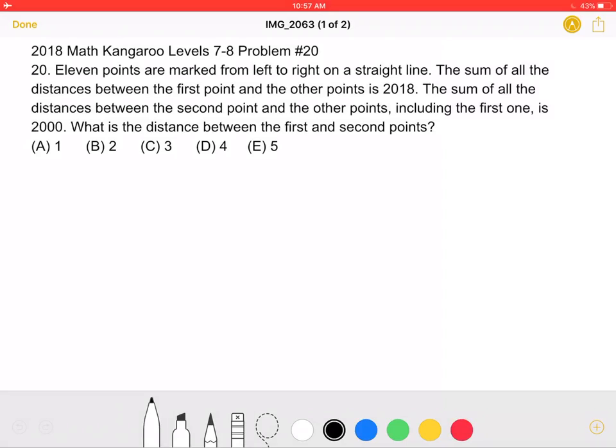What is the distance between the first and second points? A, 1, B, 2, C, 3, D, 4, or E, 5.